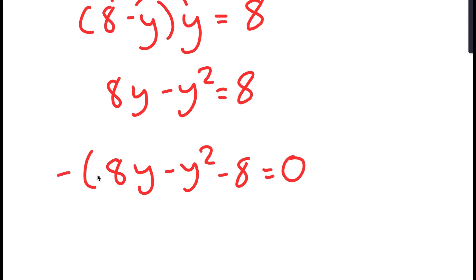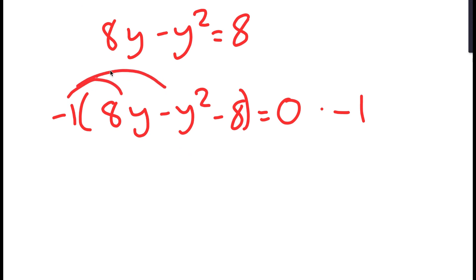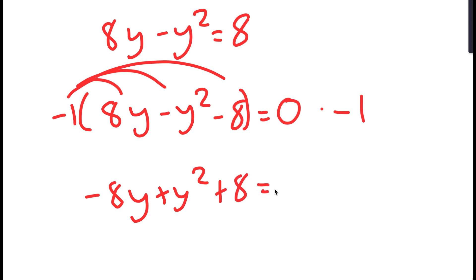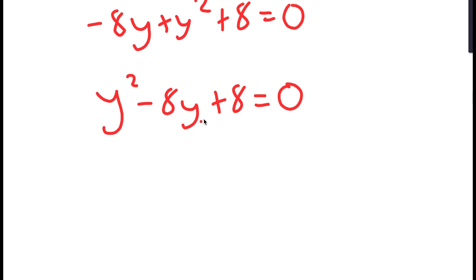From here, I'm going to multiply both sides by negative 1 so that we can make the leading term positive. So I get negative 8y plus y squared plus 8 is equal to 0. Now that the highest-degree term is positive, I can rearrange it to get y squared minus 8y plus 8.